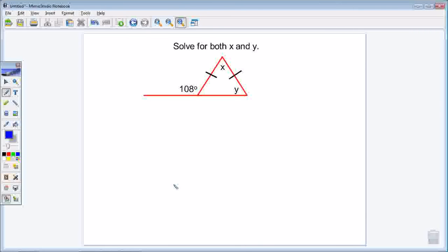Here we have another problem involving exterior angles, but this one is a little different. I'm solving for two unknowns. I have this angle x and this angle y. I now want to know what they are.